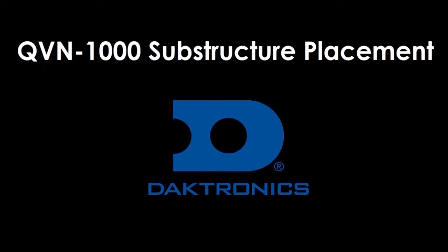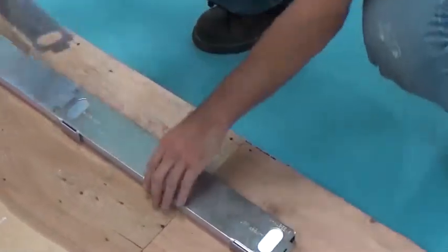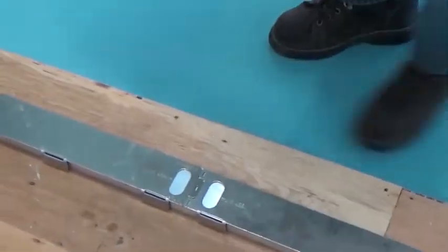This video will review substructure mounting for QVN 1000 series displays. Prior to mounting your substructure, you will need to use the included jigs to mark the tubes.